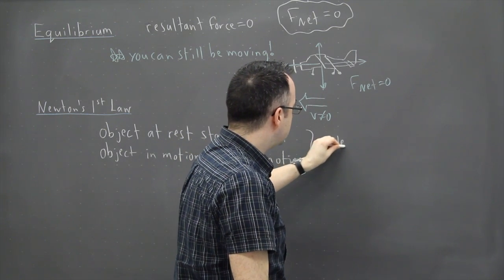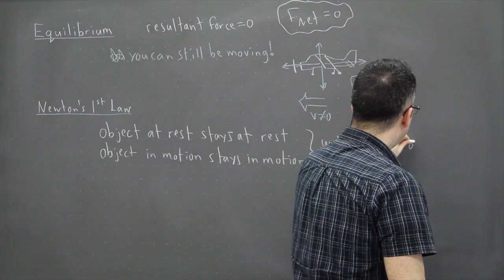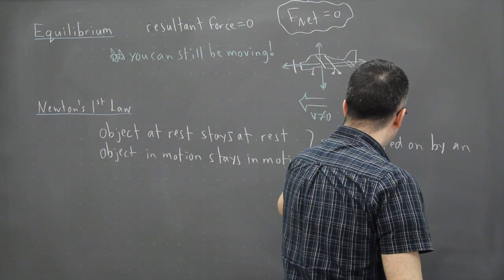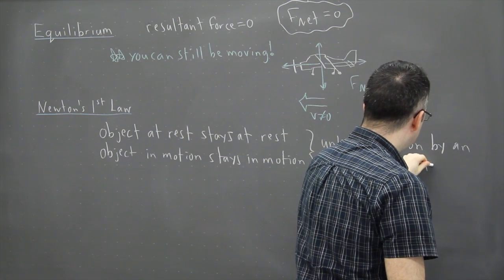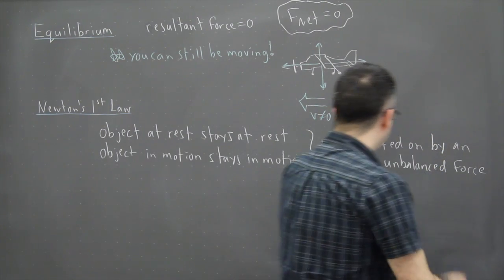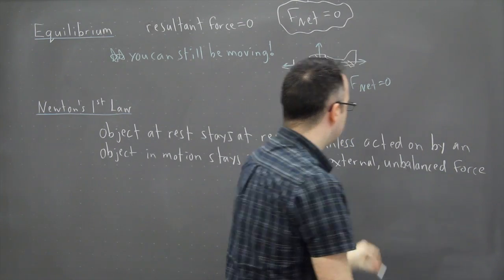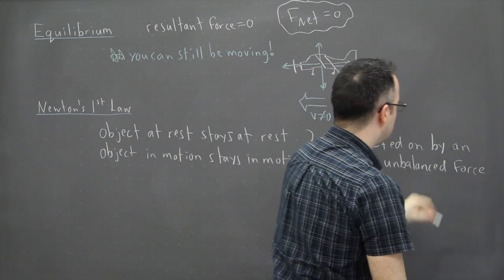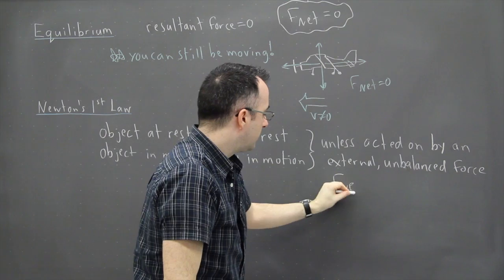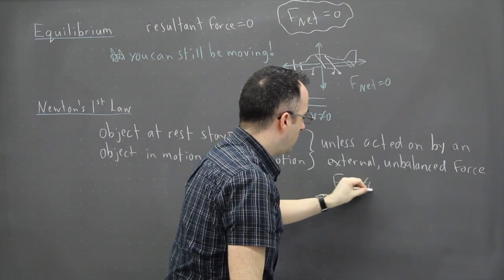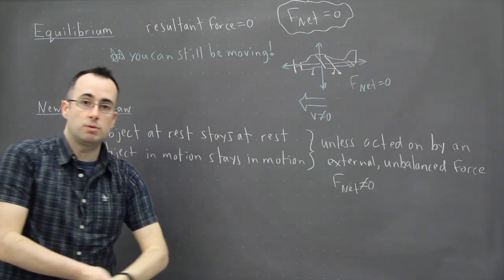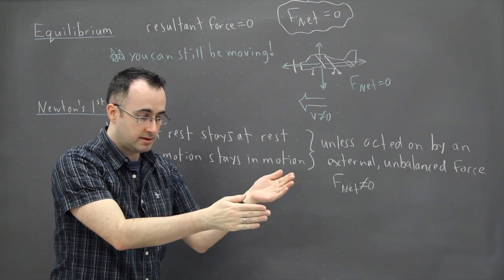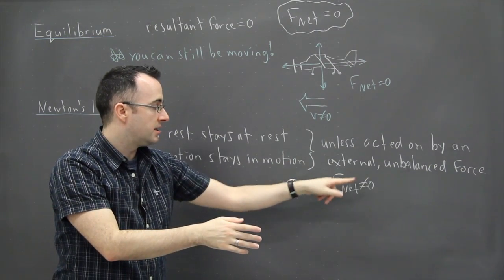So that's why I'm going to say, unless acted on by an external, here's the key part, unbalanced force. So the key thing here is that F_net is not zero, this unbalanced force. So what this means is that you're going to want to go in a straight line unless something comes and is an unbalanced force, which means the net force is not zero.